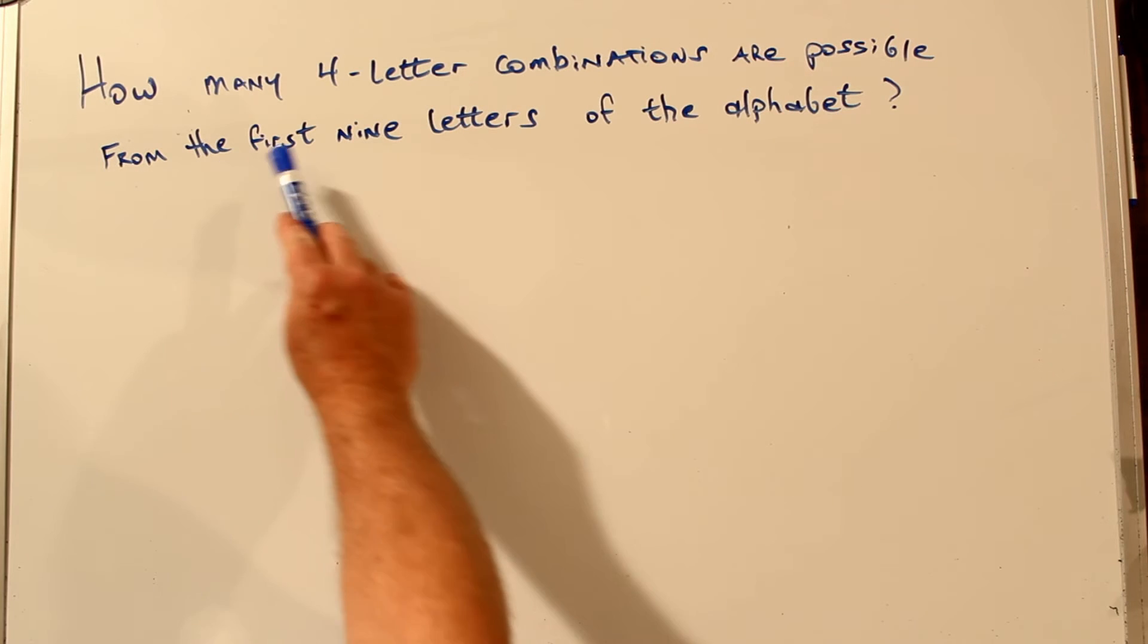Let's look at this problem. How many four-letter combinations are possible from the first nine letters of the alphabet? To figure combinations, you first have to figure out your universe of numbers, n, and then how many choices you're going to be taking, r.